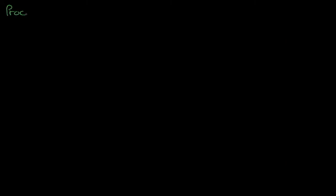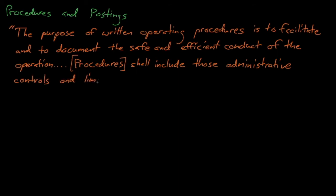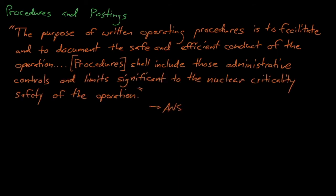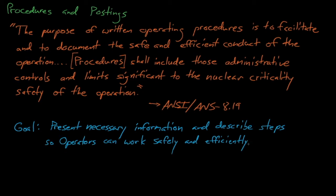Many criticality accidents were caused by flagrant ignorance of procedures. Some of these accidents were due to larger safety culture issues, but procedures and postings must still be sufficiently clear to prevent issues. According to ANSI ANS 8.19, the purpose of writing operating procedures is to facilitate and document the safe and efficient conduct of the operation. Procedures shall include those administrative controls and limits significant to the nuclear criticality safety of the operation. In other words, our goal when writing and designing procedures is to present the necessary information and to describe an operation step sufficiently so that an operator can work safely and efficiently.